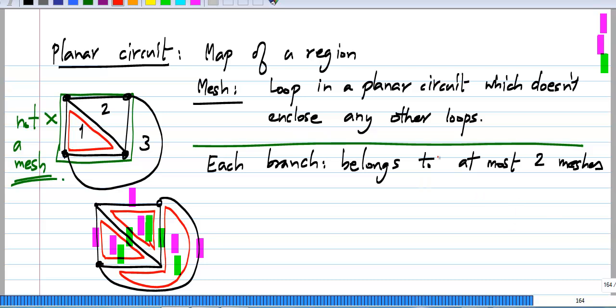By the way, once you have drawn the circuit, identifying the meshes is unambiguous. You see each region enclosed by a loop of branches and that is a mesh. You just make sure that there are no further loops inside this loop. But the same circuit can be drawn in different ways, so that still gives you some ambiguity. But once you have drawn the circuit, there is no ambiguity about the meshes.